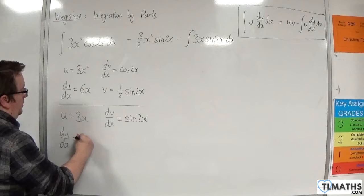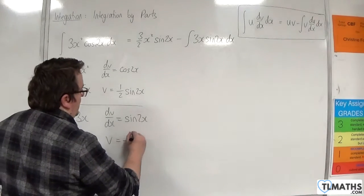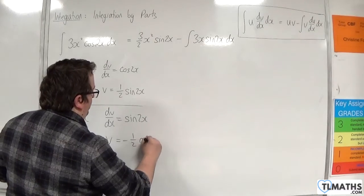So du by dx will be 3. And the integral of sine of 2x will be minus 1 half cosine of 2x.